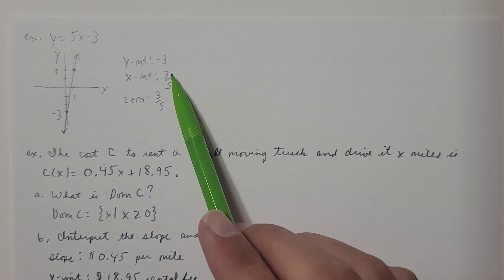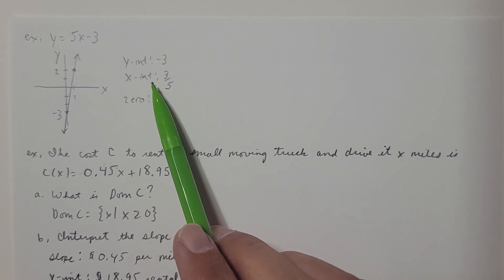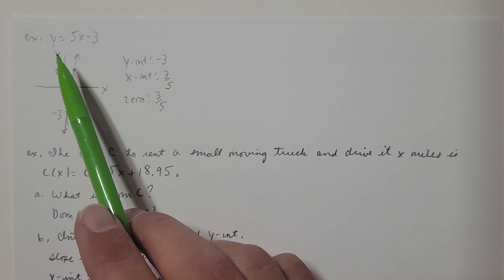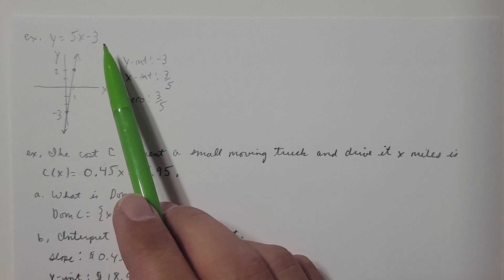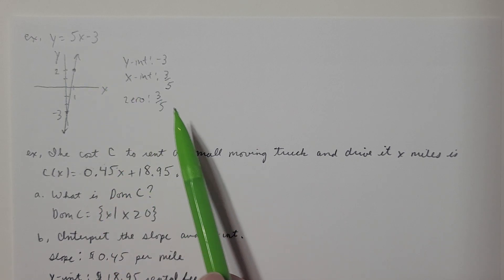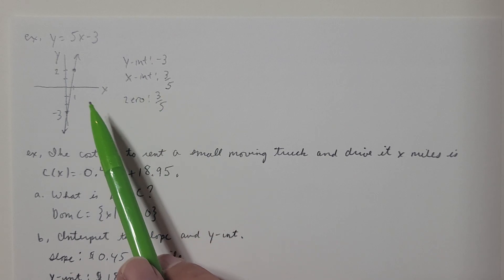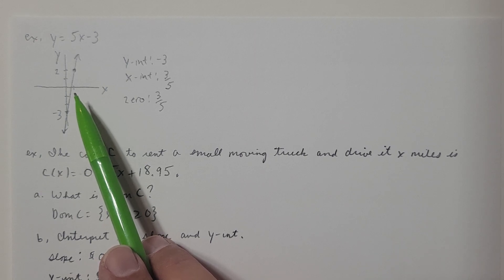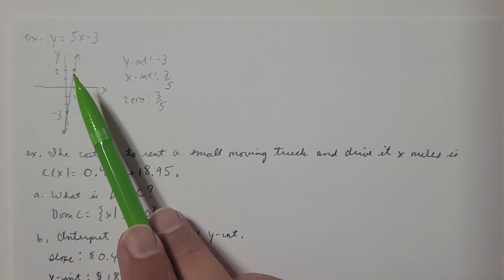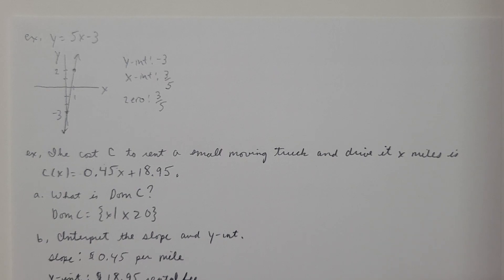The y-intercept is negative 3. The x-intercept is found by setting y equal to 0: 0 equals 5x minus 3. Adding 3 and dividing by 5, the x-intercept is 3/5, at the point (3/5, 0). The zero of this equation is 3/5 — a zero is the same thing as an x-intercept. Keep that in mind for later when we do lots of things with zeros.